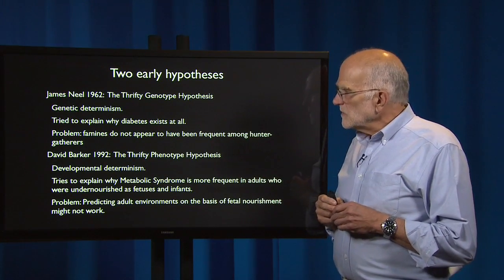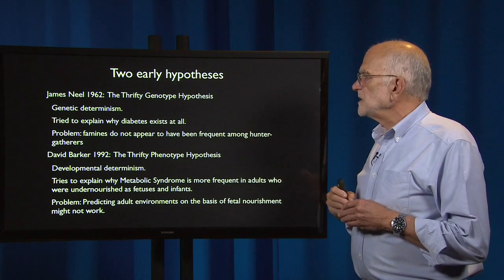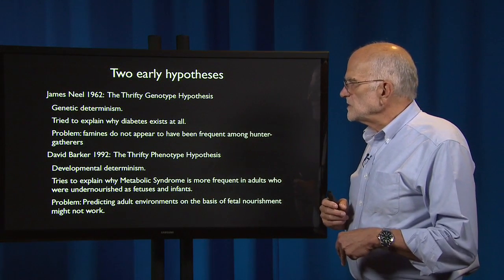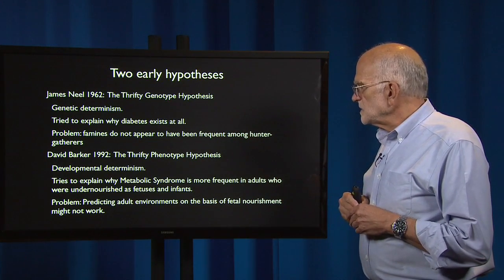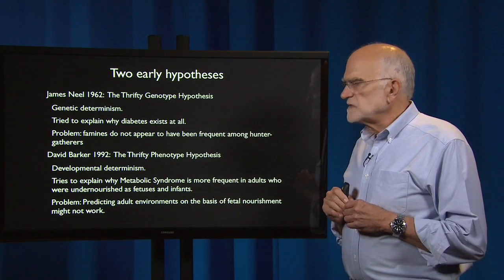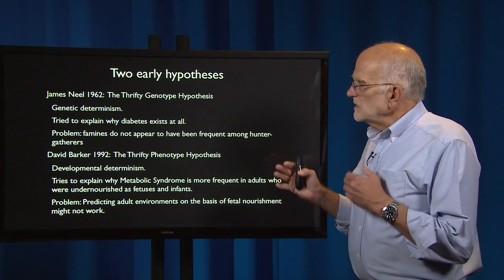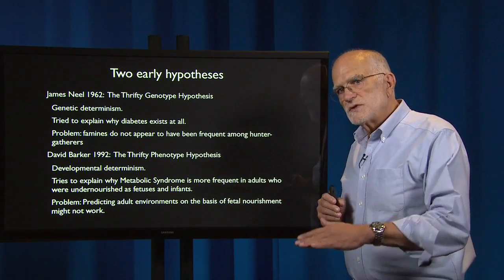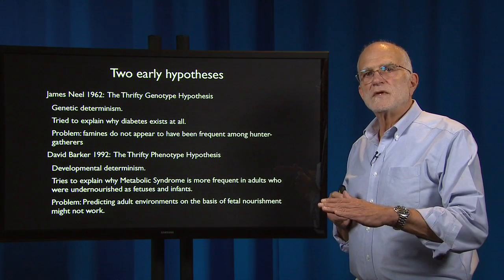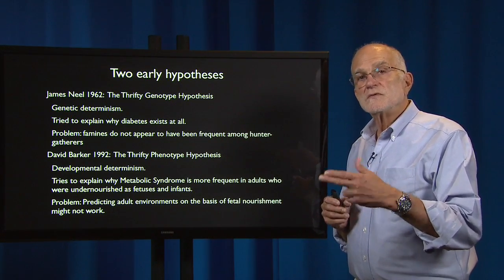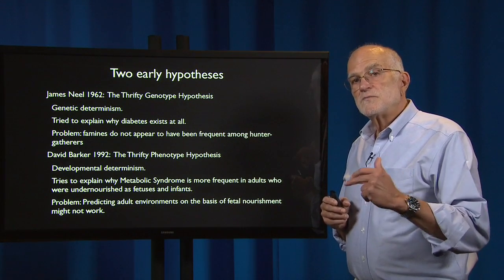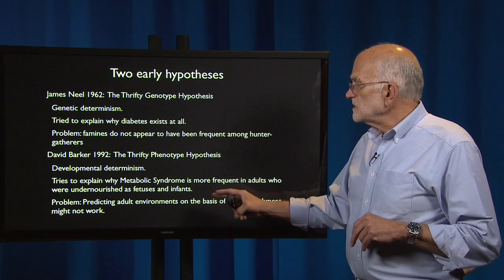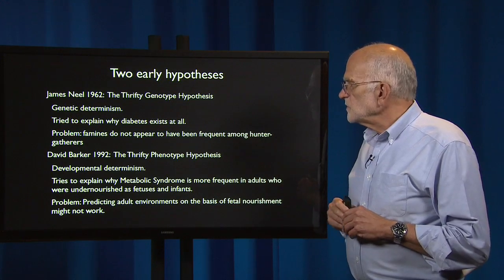David Barker, 30 years later, offered the thrifty phenotype hypothesis. Instead of genetic determinism, Barker was using developmental determinism. He tried to explain why the metabolic syndrome is more frequent in adults who are undernourished as fetuses and infants. The idea is that a developmental switch gets thrown that puts the physiology of the developing organism into a very thrifty, insulin-resistant state, and that helps to protect it against a starvation regime. The problem with that is that predicting the adult environment on the basis of fetal nourishment might not work — the correlation between food environments might not be high enough.